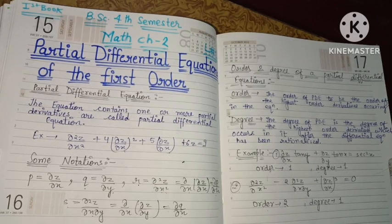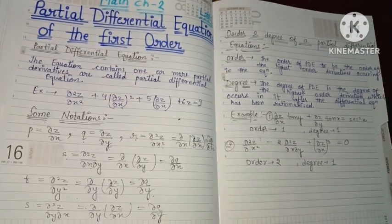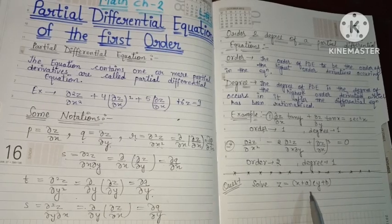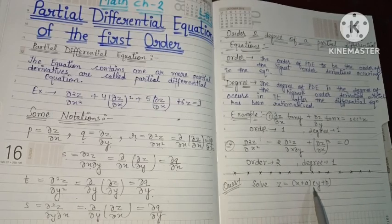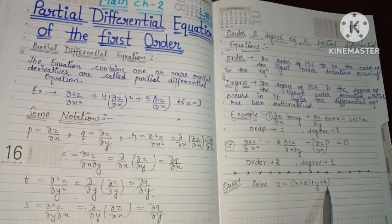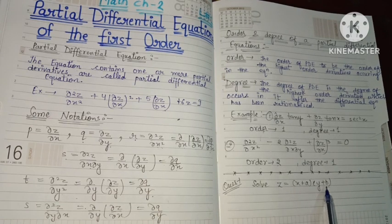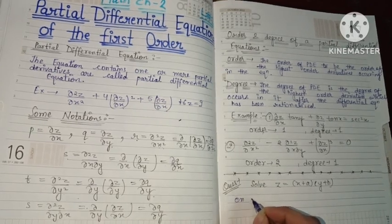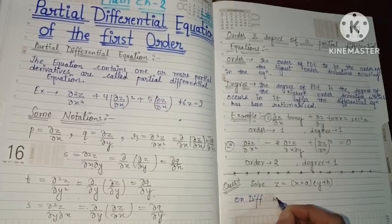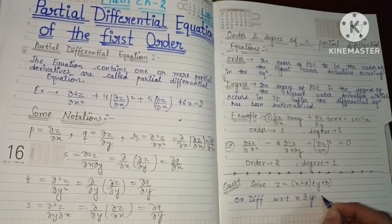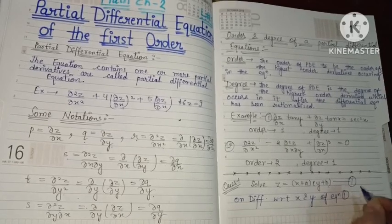Now we will solve questions from this chapter on partial differential equations of the first order. The first question given is: z = kx + ay + b. We need to solve this using partial differential equations. To solve it, we will differentiate equation (1) partially with respect to x and then with respect to y.